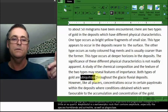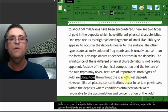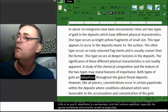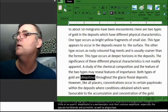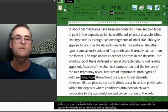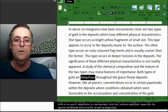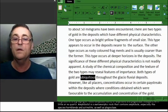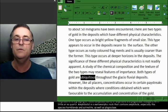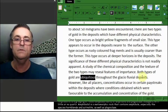Both types of gold are ubiquitous. Now that's an interesting word. What does ubiquitous mean? I've got a simple way of finding out. Let's take a look and see what the internet tells me ubiquitous means. I have a suspicion, especially because you look at the context of it. So it says, however, like all placers, concentrations occur in certain pay streaks within the deposits where the conditions obtained were favorable to the accumulation. Ubiquitous is existing or being everywhere at the same time.